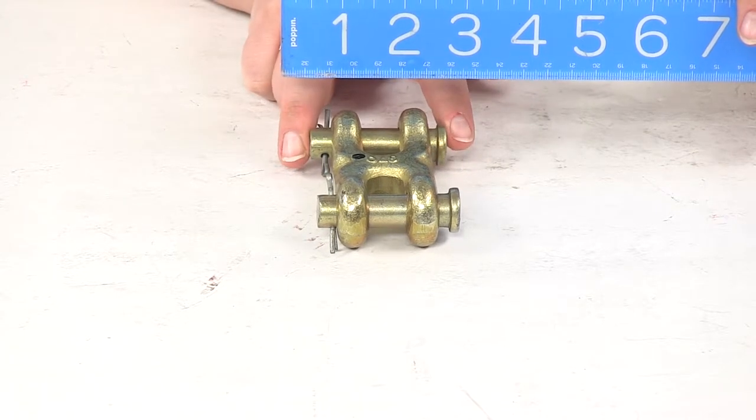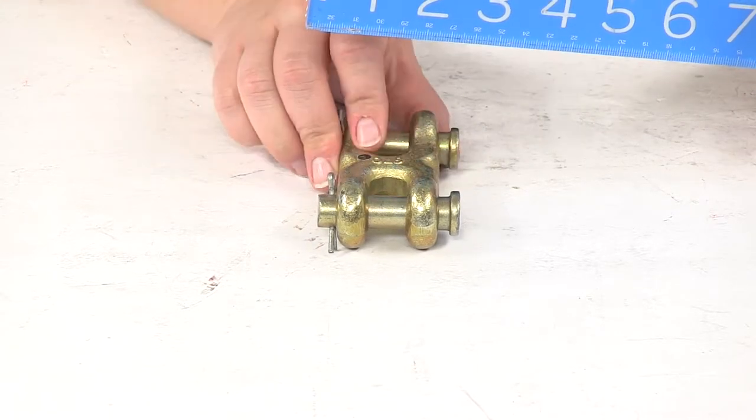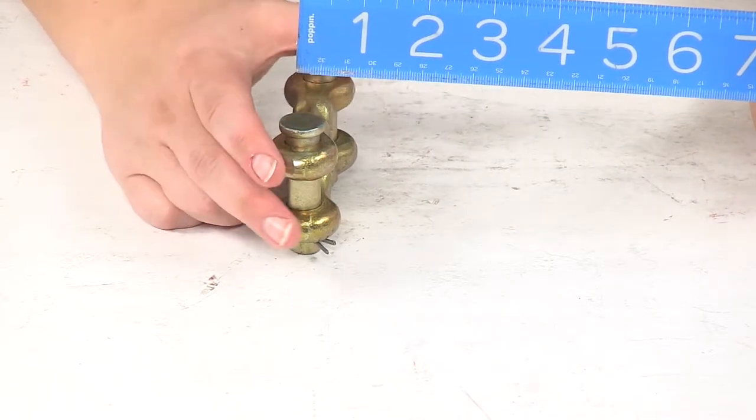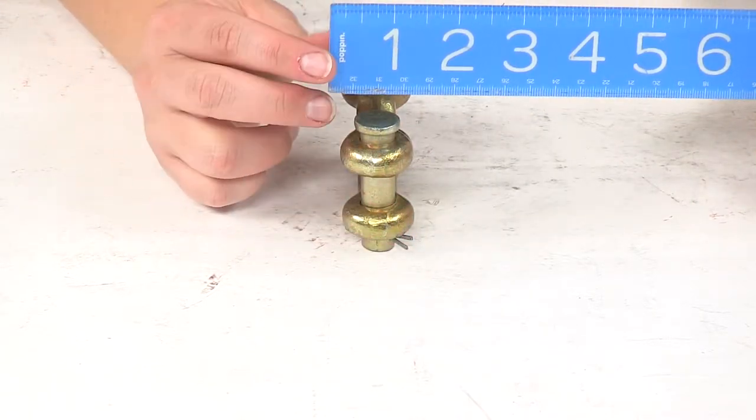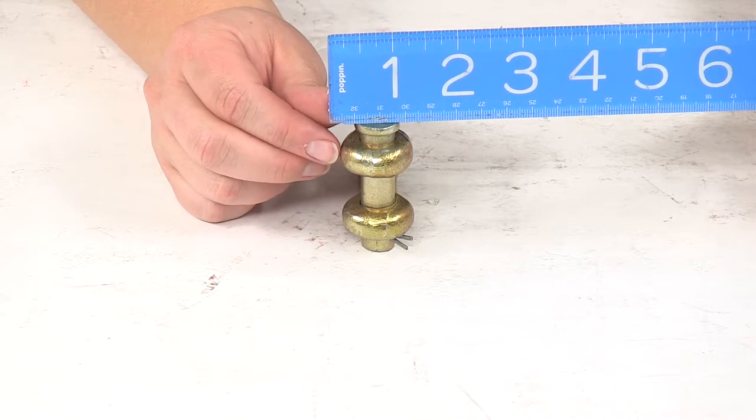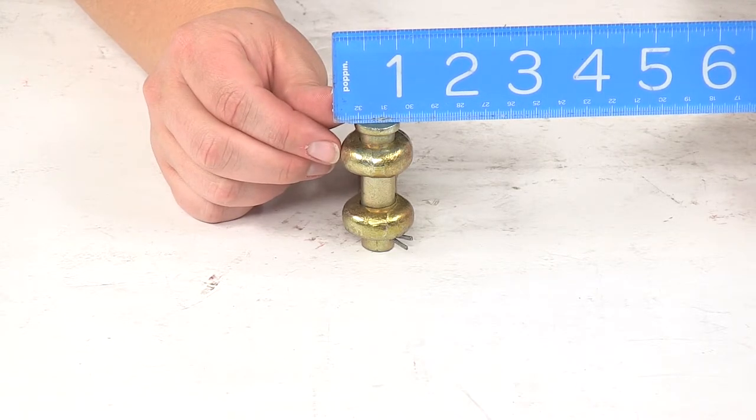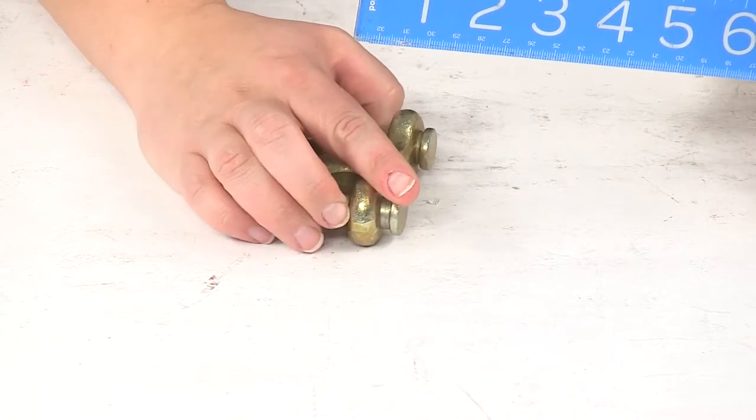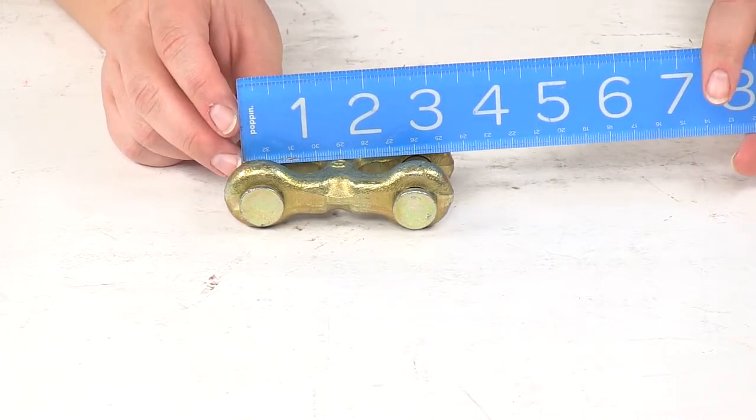That's going to be the widest point on this mid-link, and the thickness at the rounded end where that clevis pin goes through, that's going to be about an inch and an eighth thick. The clevis pin diameter is going to be half an inch.